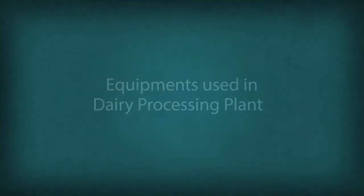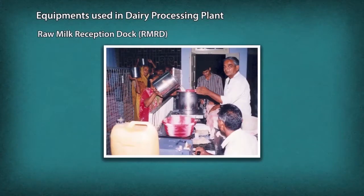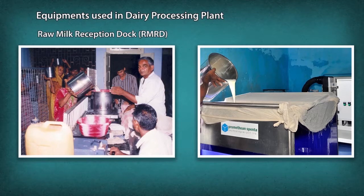Equipments used in a Dairy Processing Plant. Raw Milk Reception Dock: The place in the dairy plant where milk first arrives and is received after grading for acceptance is known as the Raw Milk Receiving Dock.